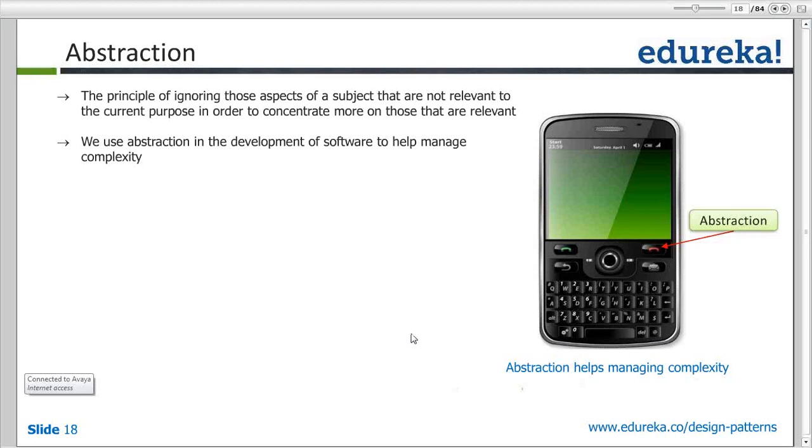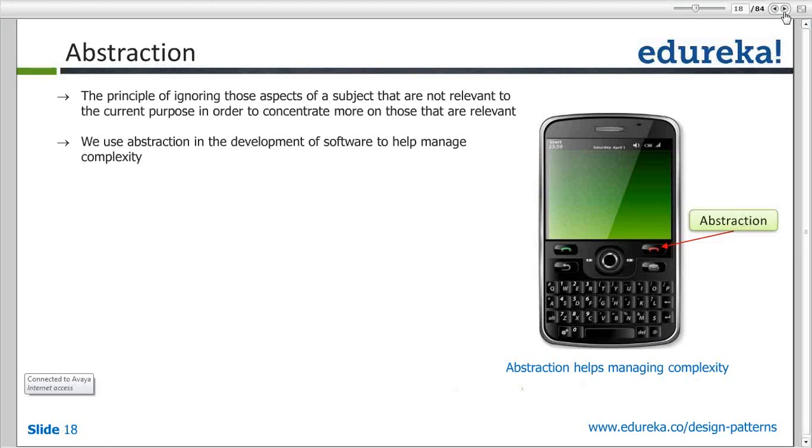Here are the key concepts around abstraction. It concentrates on only essential characteristics. For example, for a figure in a garden, you are only looking for are there four limbs, is that person standing straight or walking, is there a kind of oval-shaped or circle-shaped head - and that tells you that's a human. Perhaps it may not even be human in some cases, it may just be some sort of statue, but you know that it is a statue of a human. It allows you to manage complexity more easily.